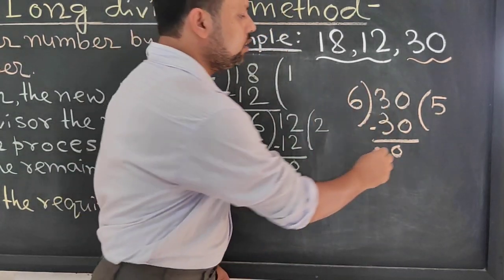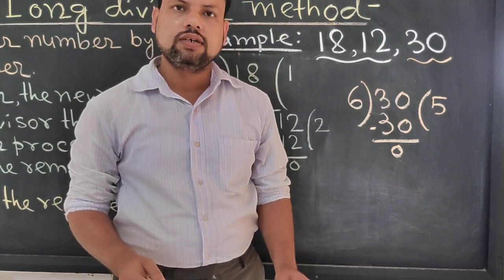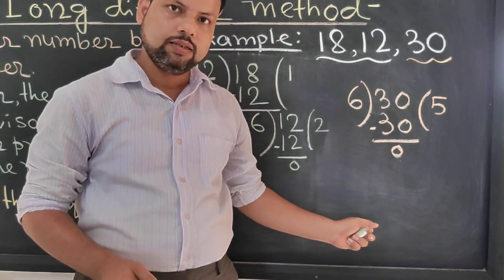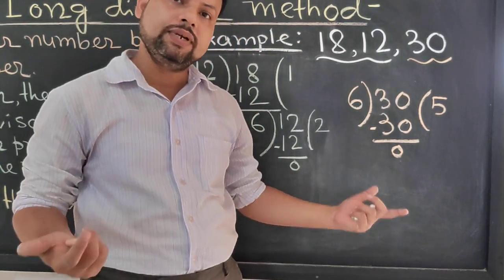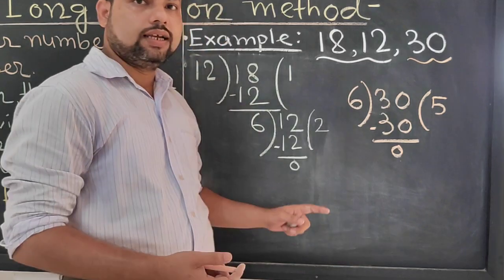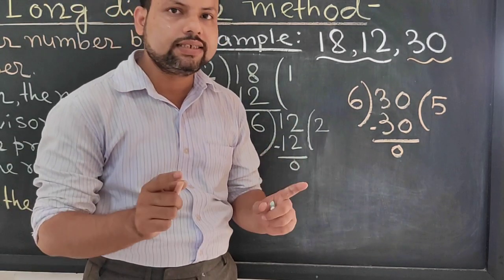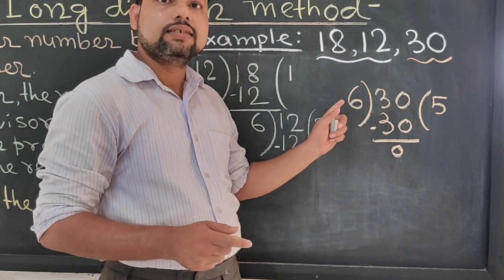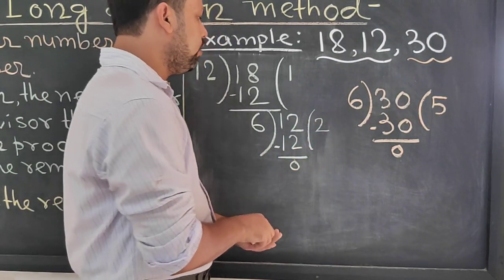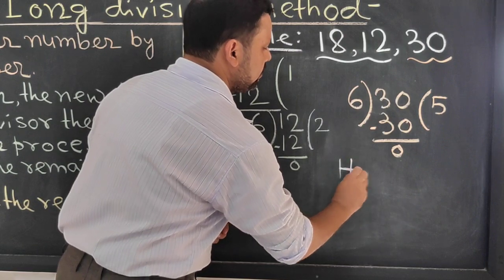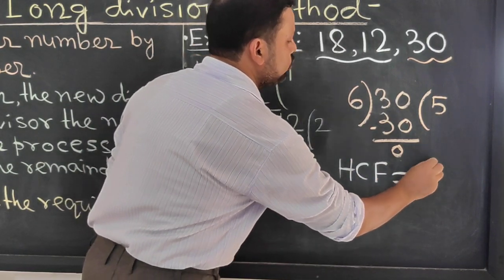30 divided by 6. Remainder is 0. That means your remainder here also 0. Till 0 you have to perform this. But here in first step we have completed this. That's why. So identify now. What is the last divisor? Last divisor is 6. That means our HCF equals to 6.